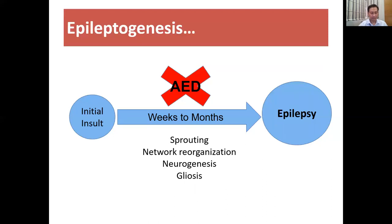Looking at epileptogenesis, after the initial insult it takes weeks to months to develop chronic epilepsy, because during this time sprouting, network reorganization, neurogenesis, gliosis happen, ultimately leading to chronic brain damage and causing epilepsy. That is why we should not use anti-epileptic drugs as prophylaxis in all cases of seizures after aborting the seizure, because no anti-epileptic drug can prevent epilepsy. Thank you, friends.